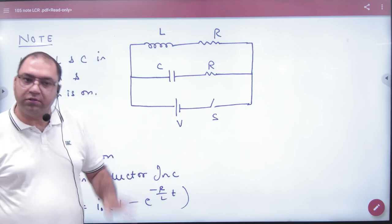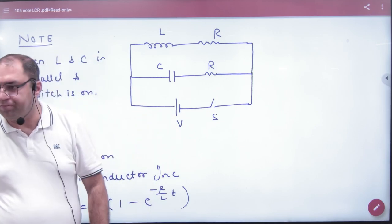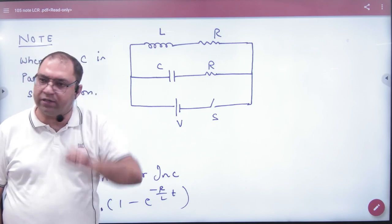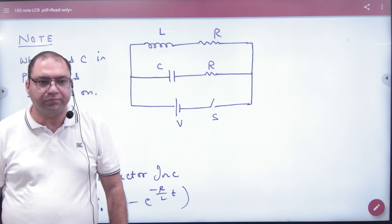DC battery and the switch is also given. When we switch on, then some current goes to capacitor and some to inductor, then what will happen?